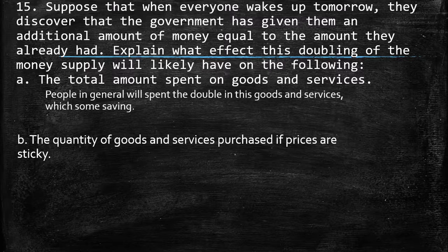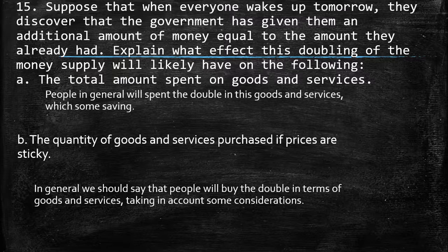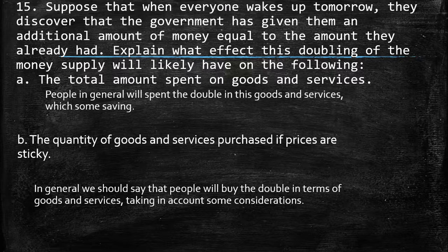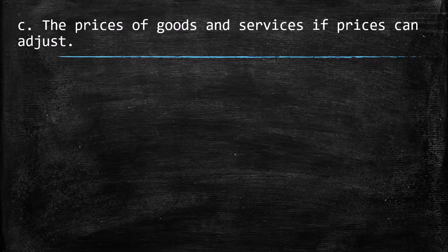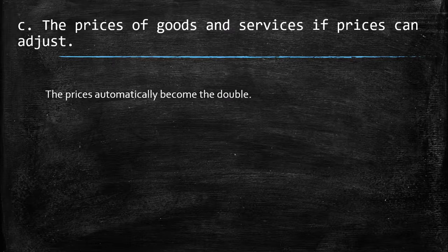The next part says: the quantity of goods and services purchased if prices are sticky. In general, we can say people buy double in terms of goods and services, but take into account some considerations. For example, with laptops, maybe you want to buy two laptops or one of better quality, or change transportation from bus to taxi. In general, we can say the quantity is going to be double. But if prices can adjust, they will immediately double as well — so if milk costs one dollar, milk will immediately cost two dollars, because everyone has double their income.